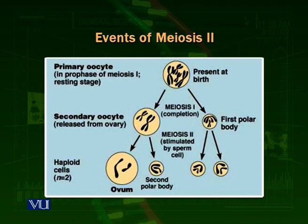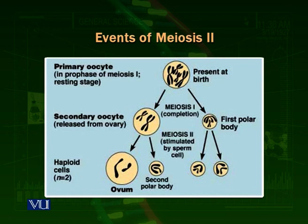In the next division — meiosis II — the polar body divides into equal-sized cells. But the secondary oocyte, the larger cell, is again divided by meiosis II, and this division is again unequal. The result is a very large ovum and a second polar body. So in a female, the primary oocyte divides into four cells, but three of these are polar bodies — small in size and discarded — and the one larger cell is called the ovum, which is retained for fertilization.